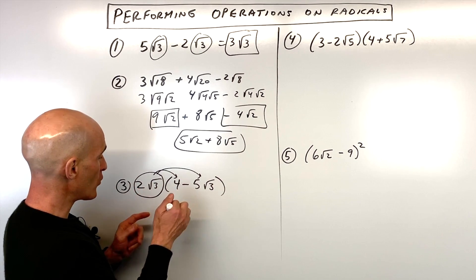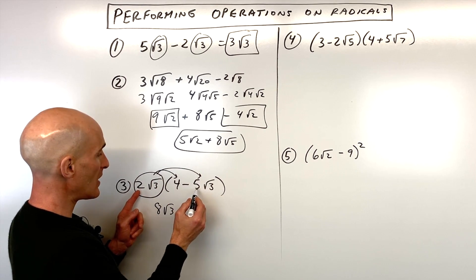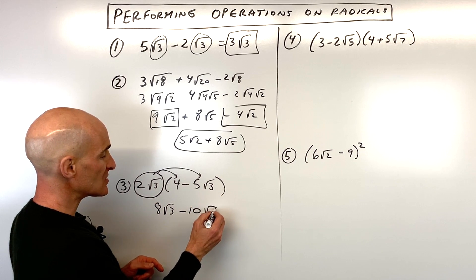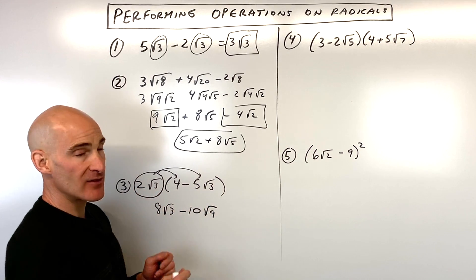So here we've got two times four, that's going to be eight square root of three. When we distribute to this group, we have two times negative five is negative 10. Square root of three times square root of three is square root of nine. So notice I multiplied the numbers on the outside and then the square roots together.